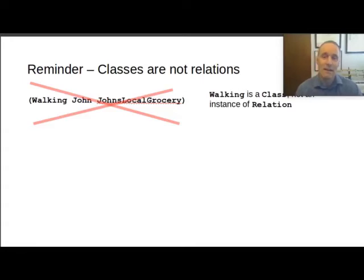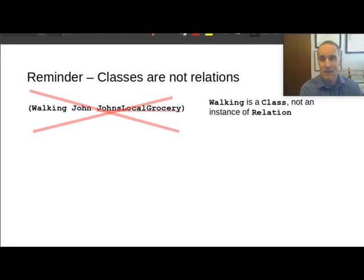And I have another whole video on Davidsonian semantics. I think I called it case roles as another word for it on why that's not a great idea and why case roles are a better formalism for talking about actions. So in the case of SUMO, this is not allowed. And SUMO walking is a class of actions. It's a class of ambulating acts. And it's not an instance of relation. You can't put it in that first argument. It's not a relationship. It's the class of all walkings.